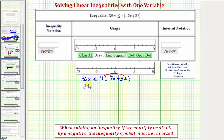So we'd have 36x is less than or equal to four times negative seven x is negative 28x, plus four times 32 is equal to 128.